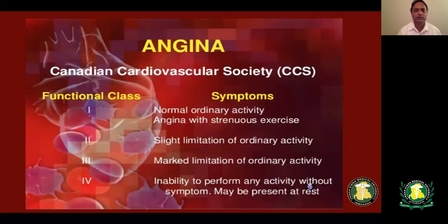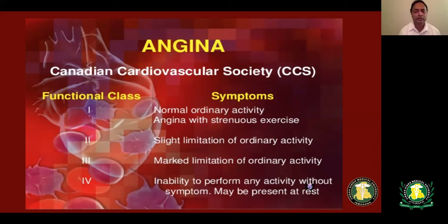This is the Canadian functional classification we use commonly in patients who come in with typical symptoms of angina. Depending on this classification, we treat them differently. If the patient has typical symptoms of angina only on strenuous activities, they are considered Canadian Class 1. If it slightly affects their ordinary activities and improves with changing activities or rest, they are Class 2. If it affects daily activities or symptoms happen at rest, they are considered to have unstable angina — functional Class 3 and 4 symptoms can be categorized as unstable angina.